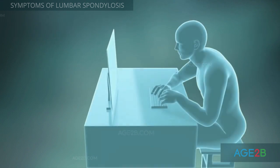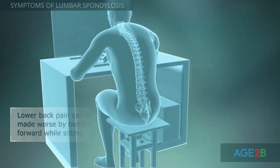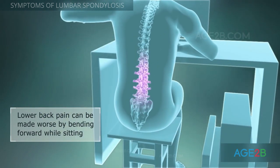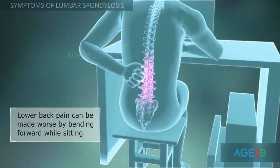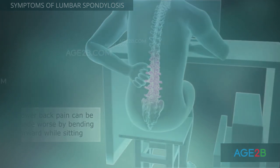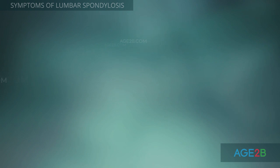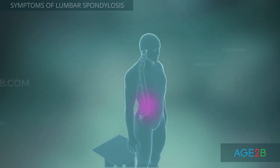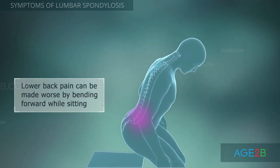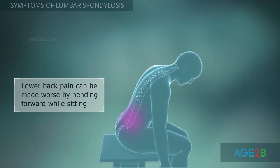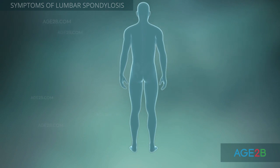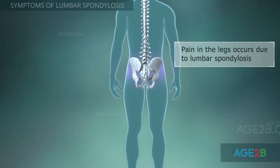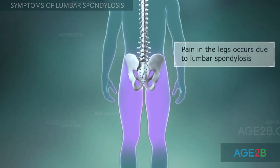The lower back pain of lumbar spondylosis caused by an intervertebral disc herniation is made worse by prolonged periods of bending forward while sitting. Back pain caused by facet joint osteoarthritis is worse when standing and is relieved by sitting or bending forward.